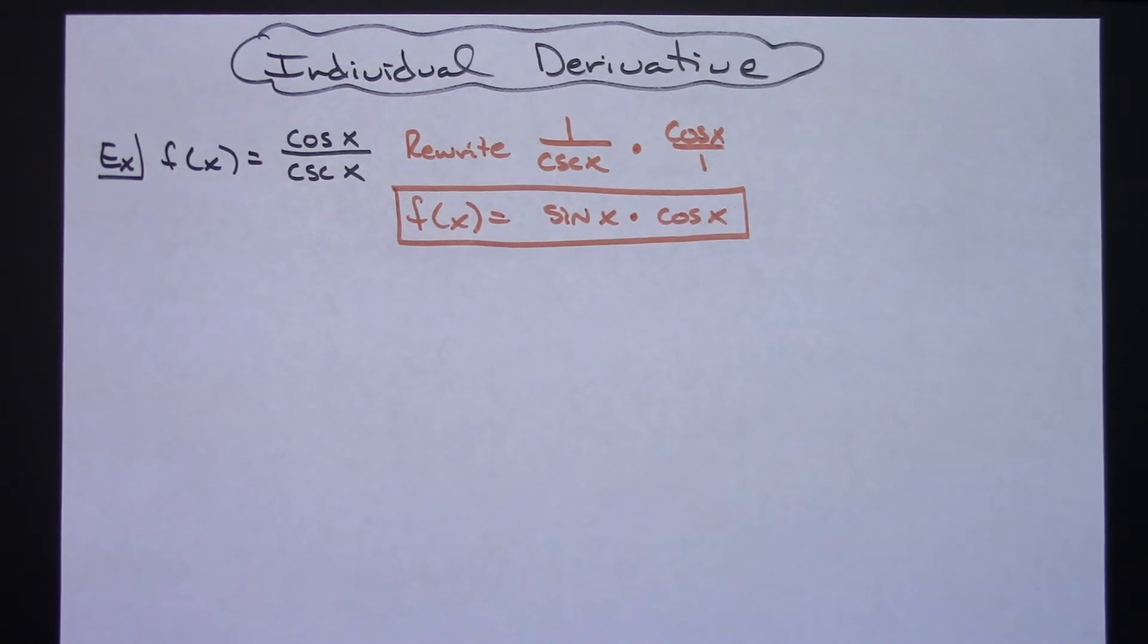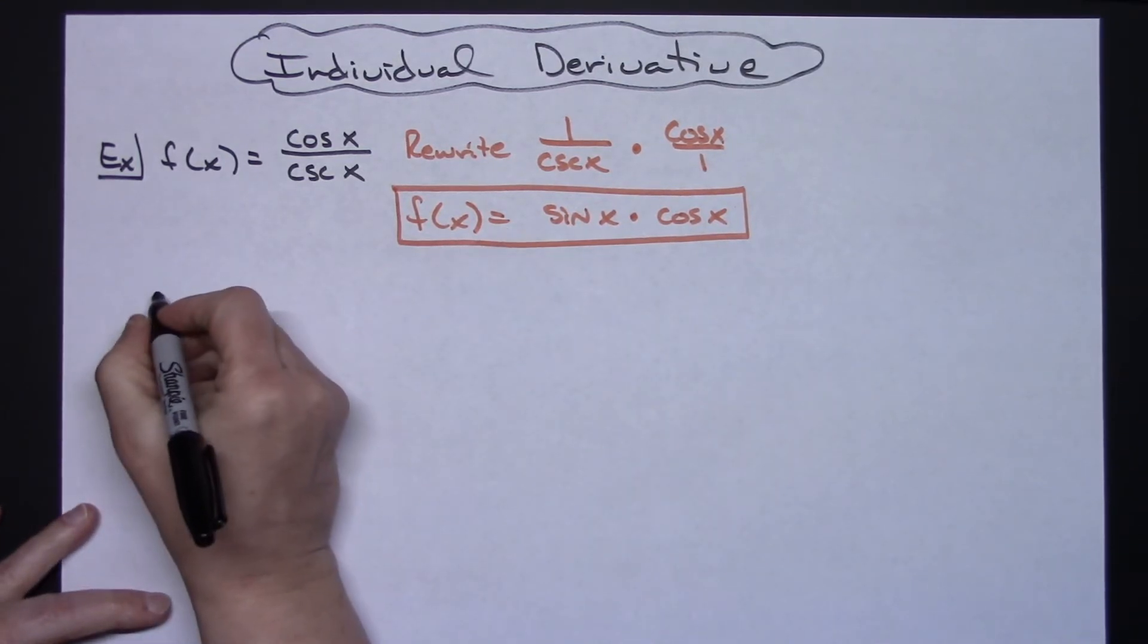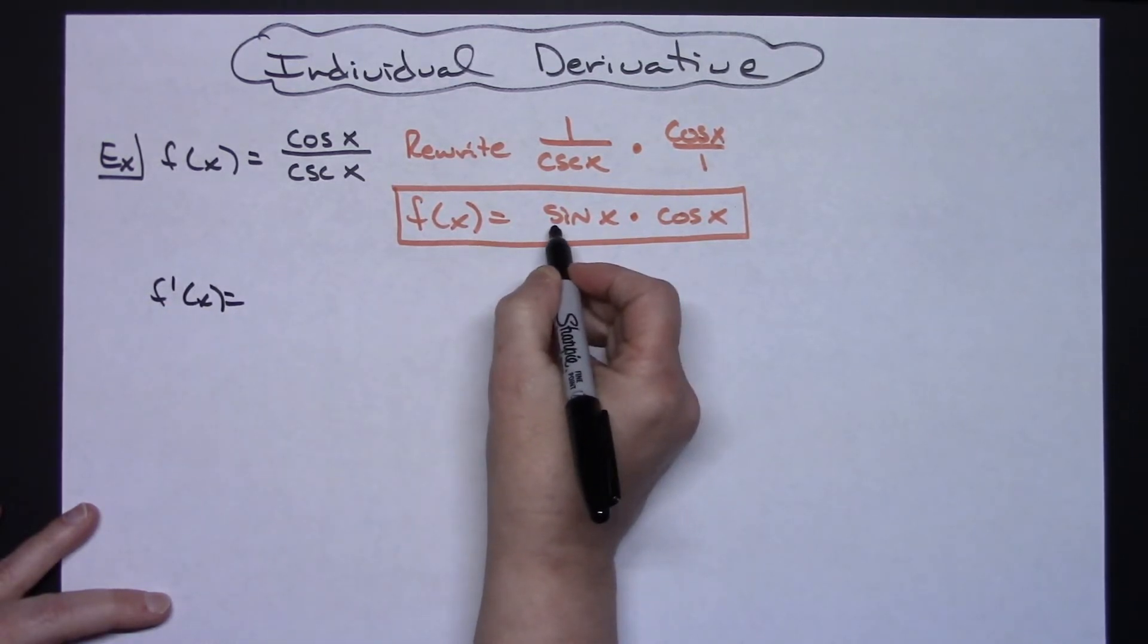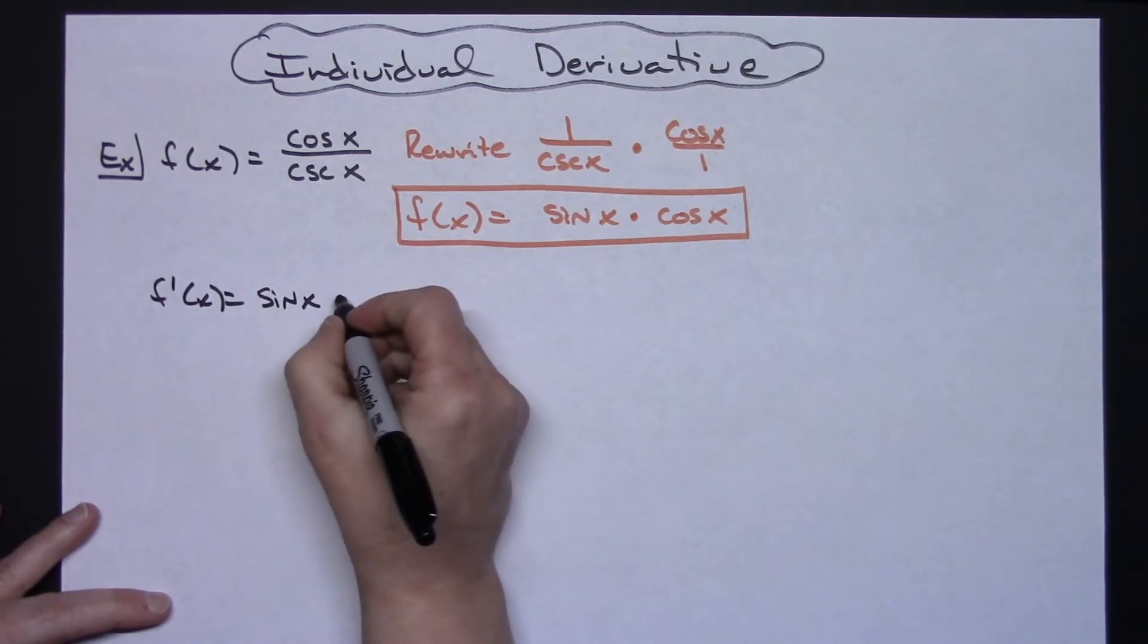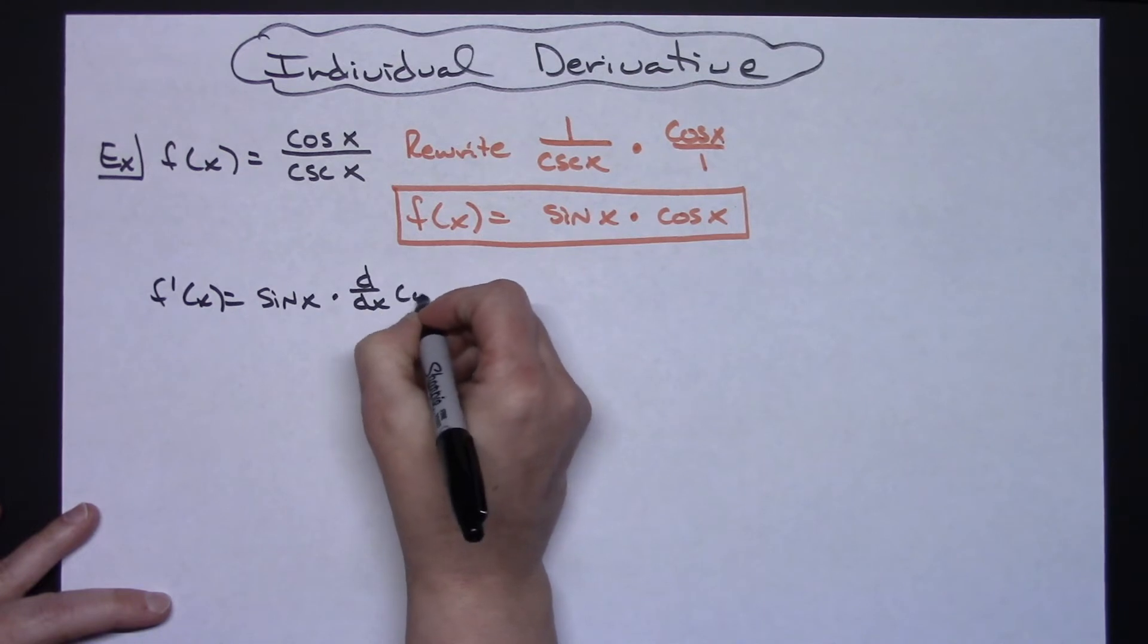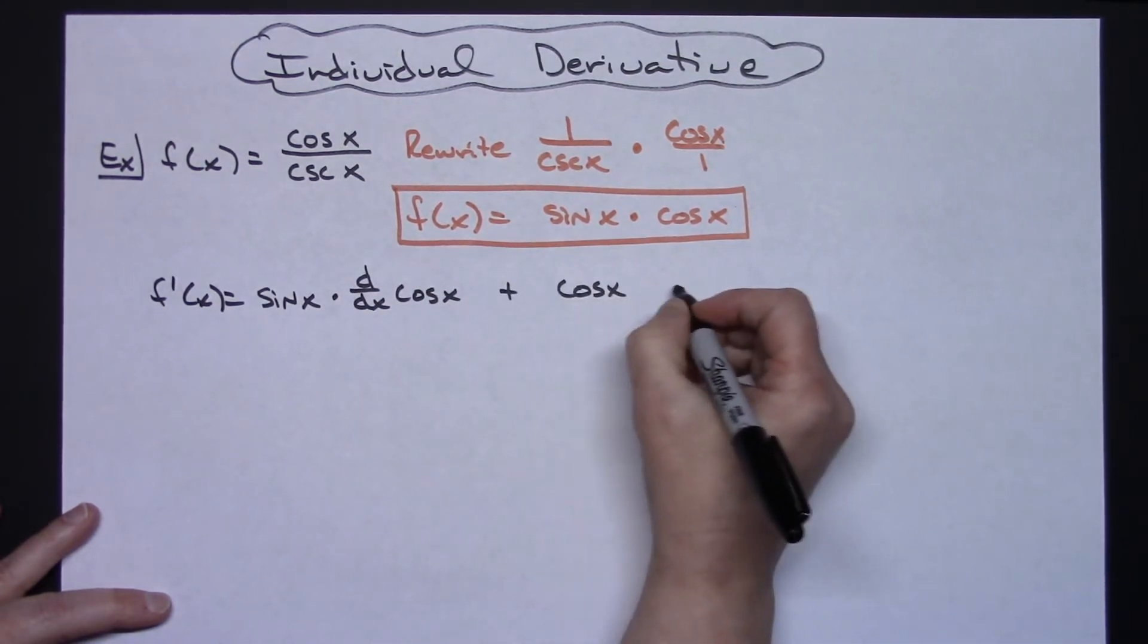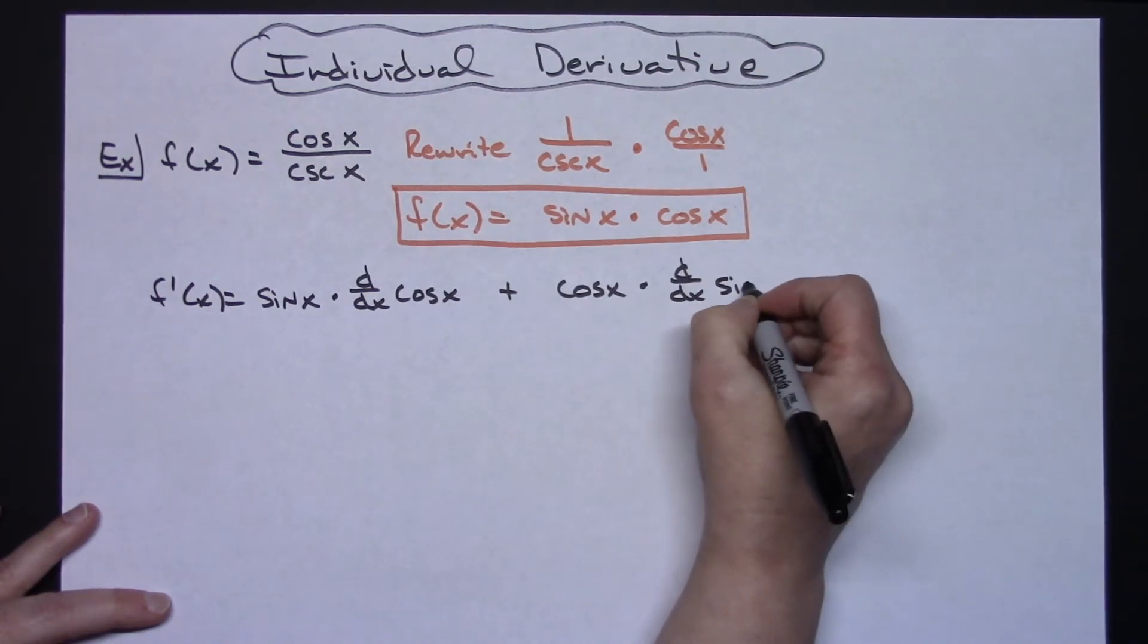Let's go ahead and finish this out with product rule. So f prime of x then is going to be the first, which is sine x, times the derivative of the second, d/dx of cosine x, plus the second cosine x times derivative d/dx of sine.